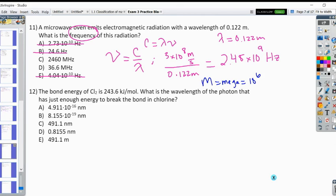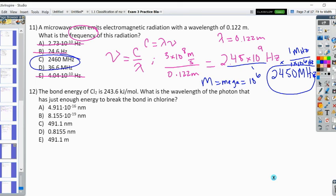And so our value is 2 times 10 to the 9th, and so if we converted this we would find that we get 2450 megahertz. And you would do that by seeing that there's 1 times 10 to the 6th hertz in 1 megahertz, which will give you this value here.